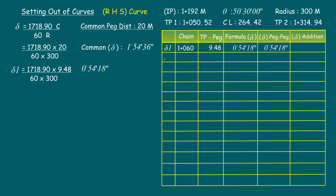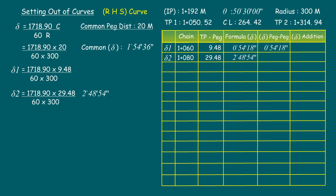Now let us calculate the delta value for the next peg at chainage 1+080, which is 20 meters from the first peg. The curve length from tangent point one to peg number two is 9.48 + 20 = 29.48 meters. Delta 2 is 1718.9 × 29.48 divided by 60 × 300, giving 2° 48' 54.6". The difference between delta 1 and delta 2 is 1° 54' 36", which equals the common delta value calculated at the beginning.